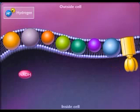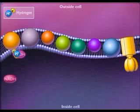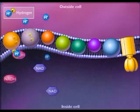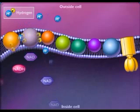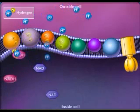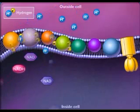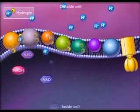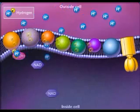Electrons enter the electron transport chain when NADH transfers its protons plus electrons to a membrane-embedded carrier protein. The electrons are sequentially carried along the electron transport chain while the protons are shuttled to the outside of the membrane.